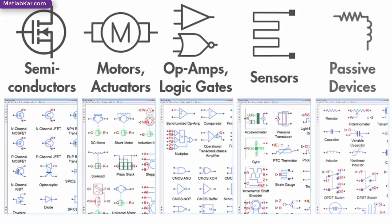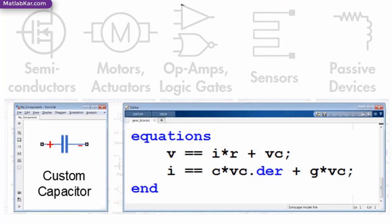SimScape Electronics includes many types of components such as semiconductors, motors, op amps, logic gates, and passive devices. You can create custom component models with the MATLAB-based SimScape language.